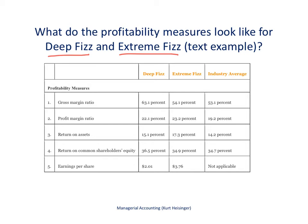The setup is that we are a fast food restaurant looking to figure out which of two companies we should purchase our beverages from — think of this as selecting between Coca-Cola and Pepsi in a real-life scenario. We've got two fictitious companies: Deep Fizz and Extreme Fizz, and we're also looking at the industry average, which was researched online rather than made up.